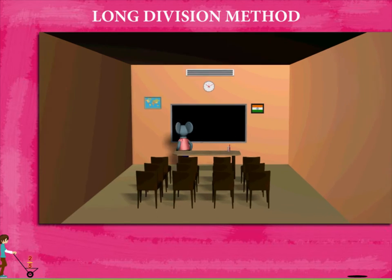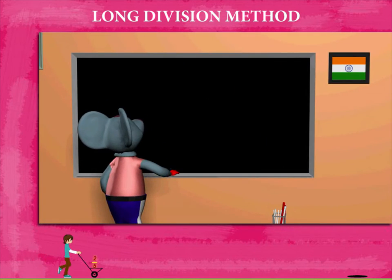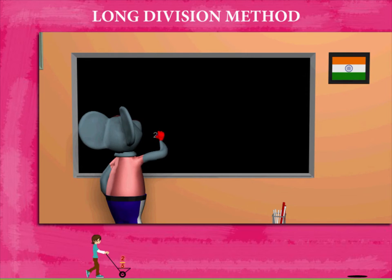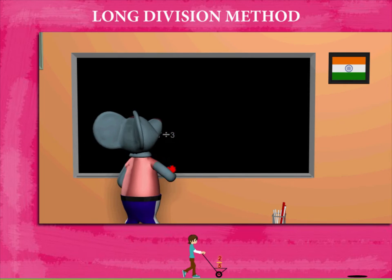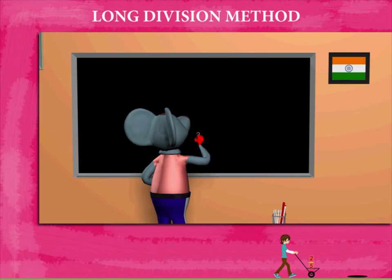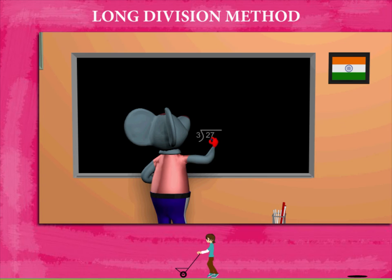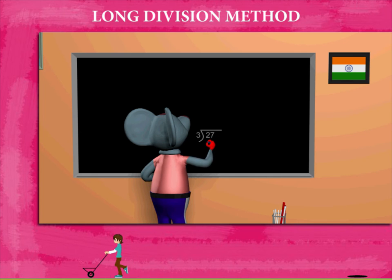Log Division Method. Robby Mouse has a question on the board. He has to divide 27 by 3. He uses the log form, writes 27 as the dividend, and 3 as the divisor.